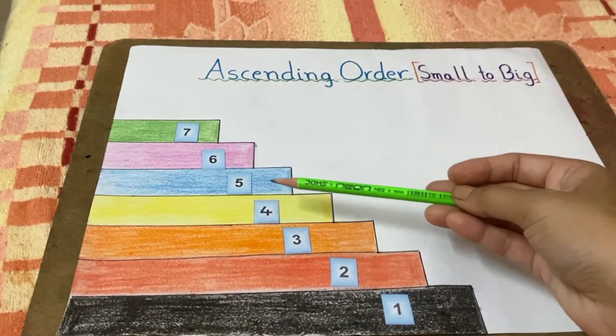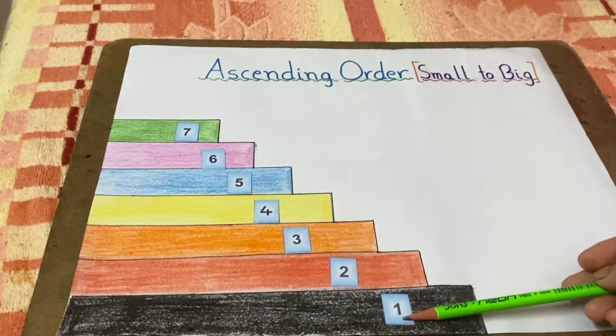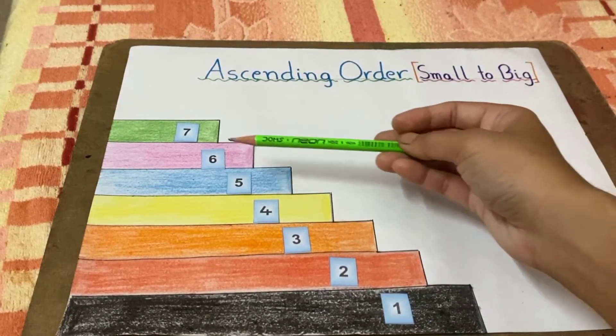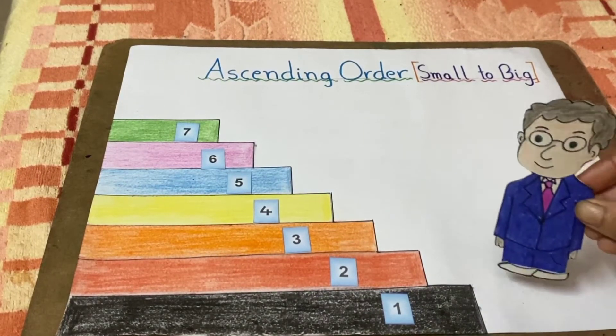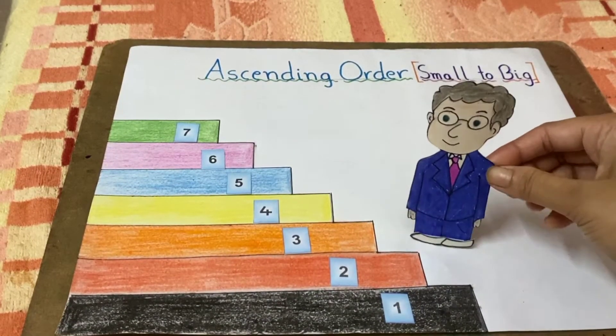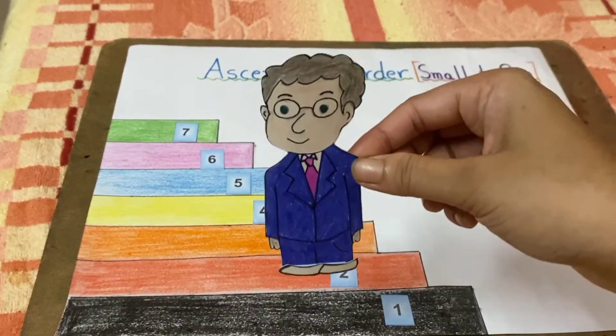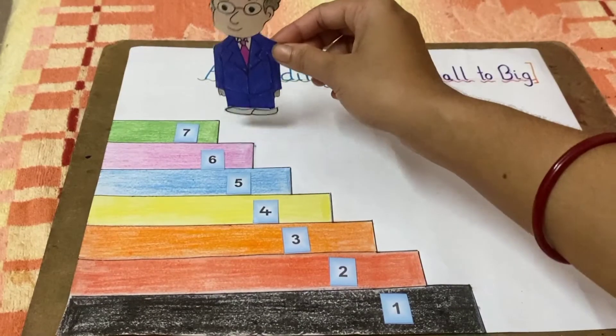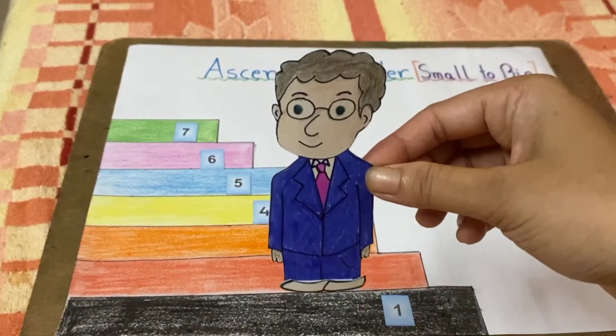Now children, meet Mr. Jack. Hello children, I am Jack. I want to move from down to up the stairs. So Mr. Jack wants to move from down to upstairs.